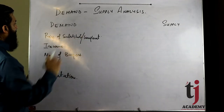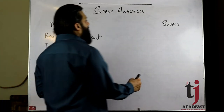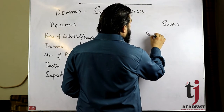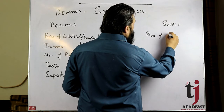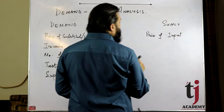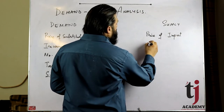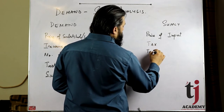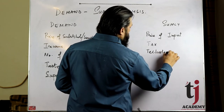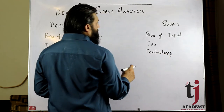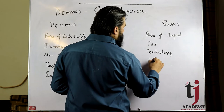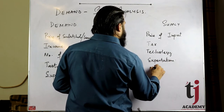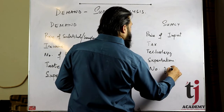On the supply side, the factors we have covered are: price of inputs, tax, technology, expectations, and number of sellers. These five factors affect supply other than price.